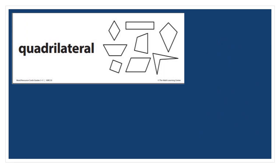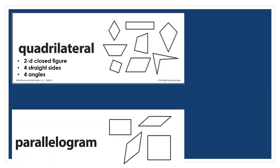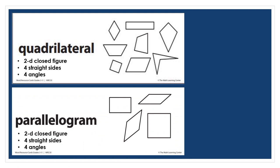Our learning target is naming quadrilaterals in multiple ways. To do this, we must notice and note attributes that are similar and that are different. A quadrilateral is a two-dimensional closed figure that has four straight sides and four angles. Within this group of quadrilaterals, there are special quadrilaterals with unique attributes. One is named parallelogram. Parallelograms are quadrilaterals that have an additional unique attribute.